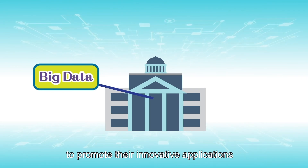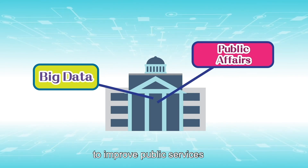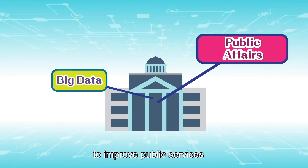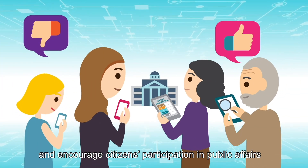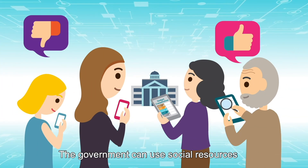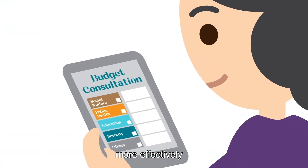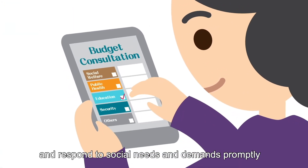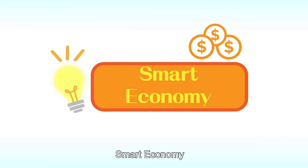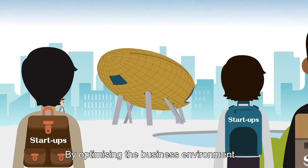Smart government: the government opens up public sector data to promote innovative applications, to improve public services, and to encourage citizens' participation in public affairs. The government can use social resources more effectively and respond to social needs and demands promptly.